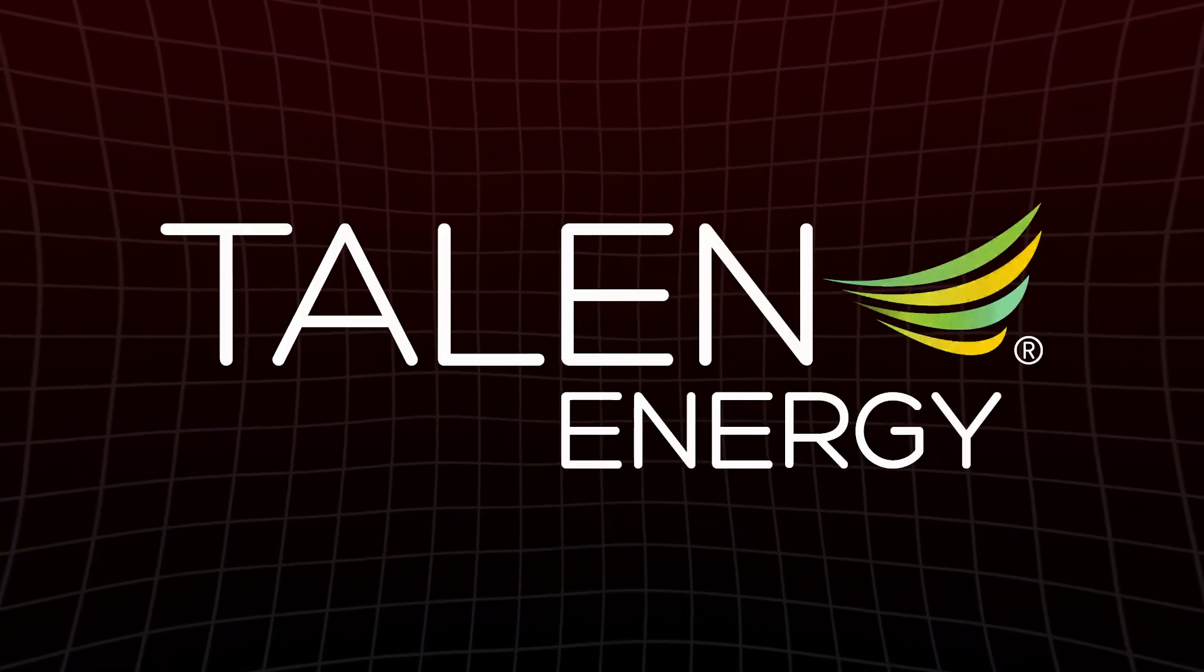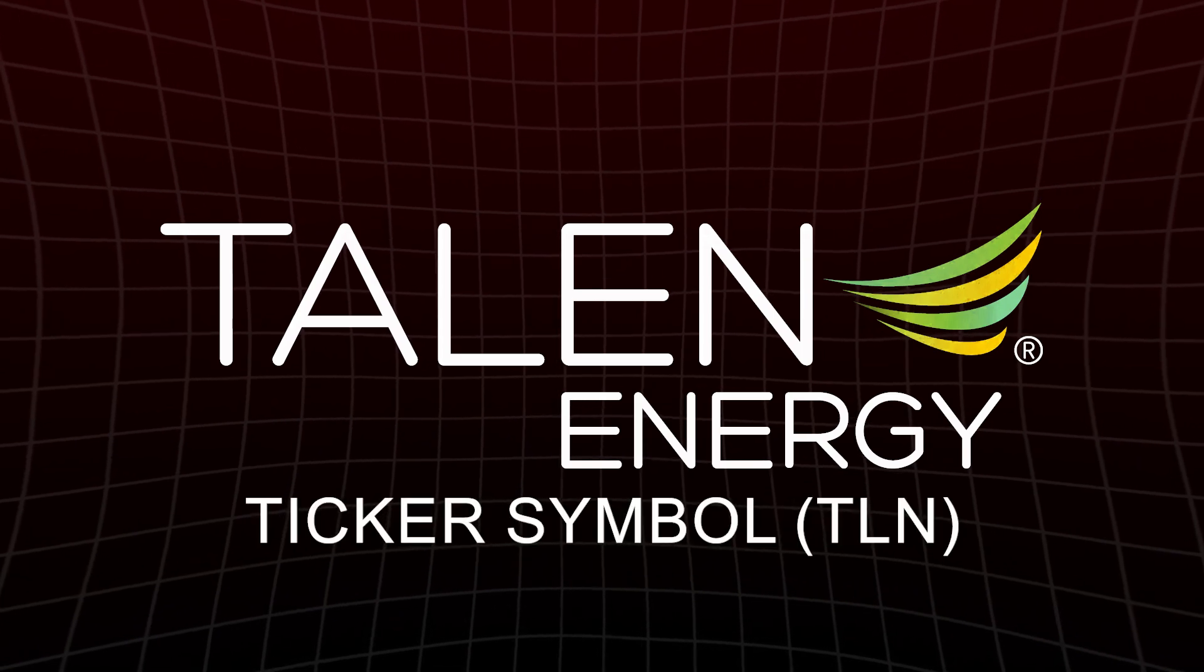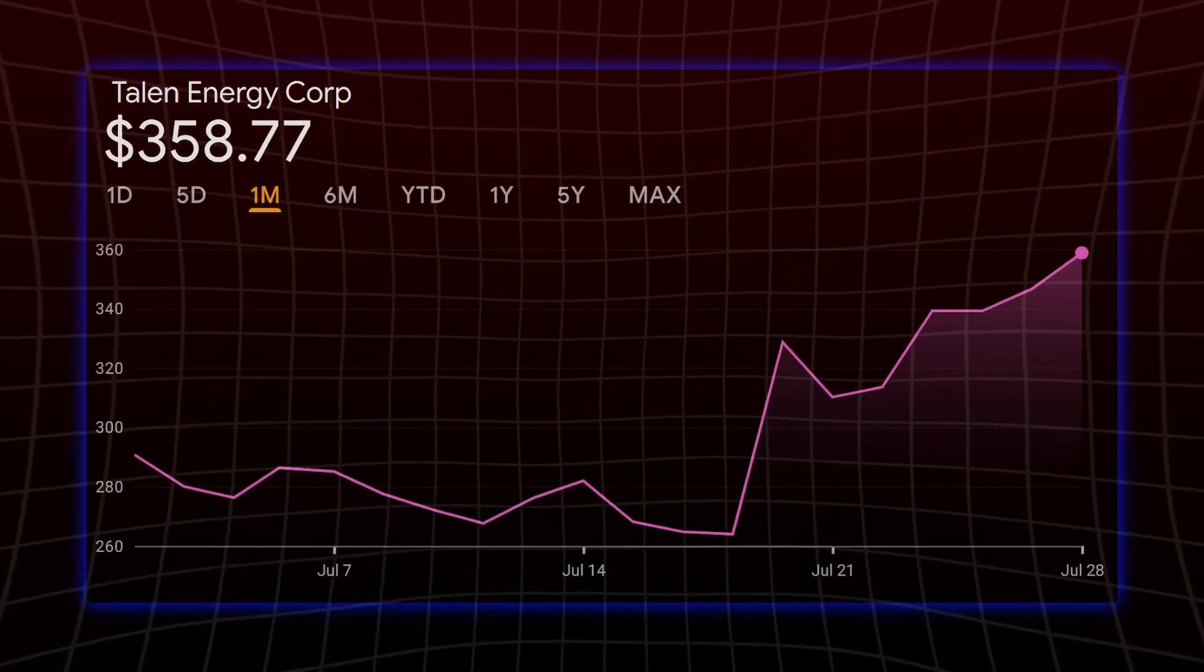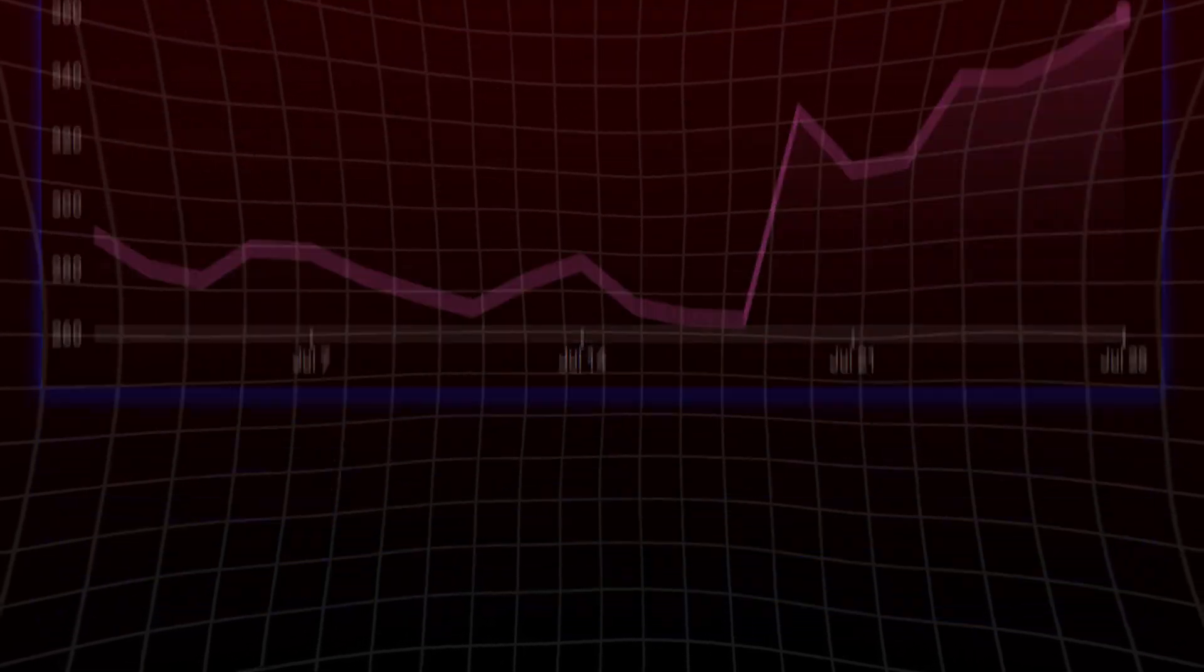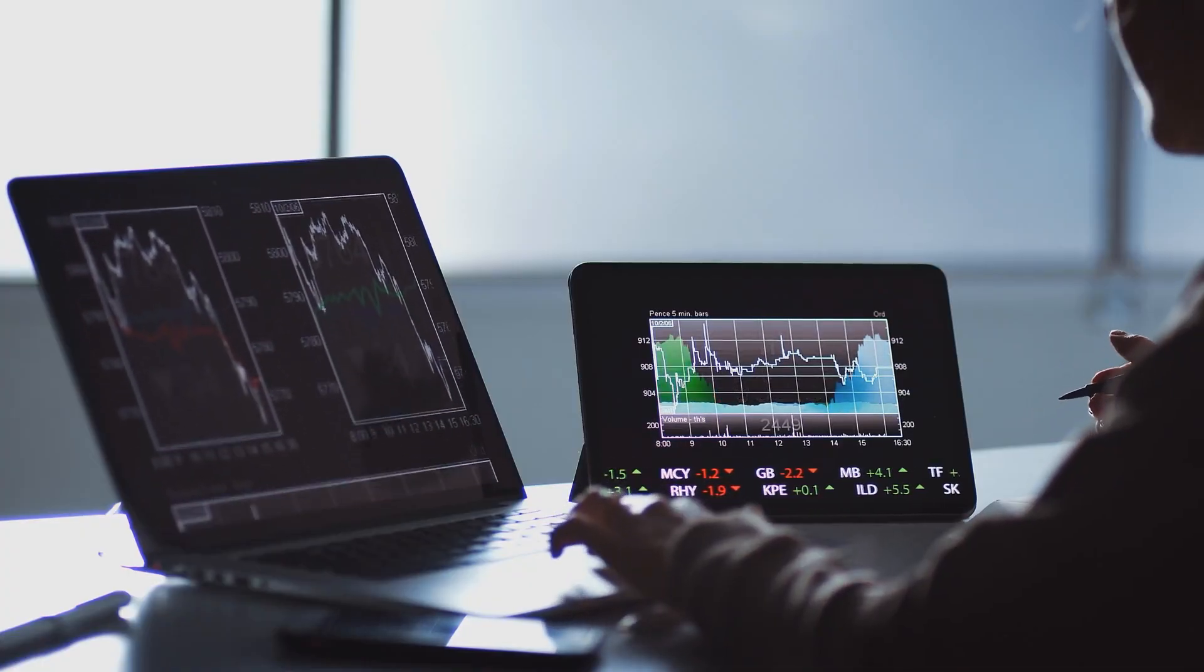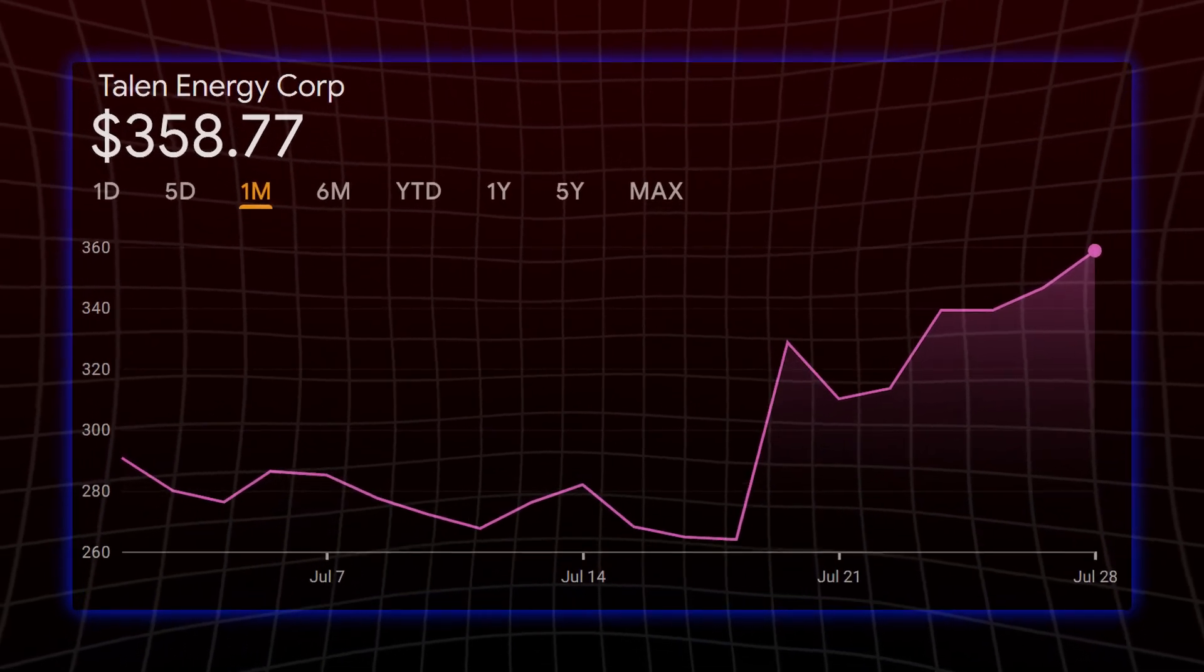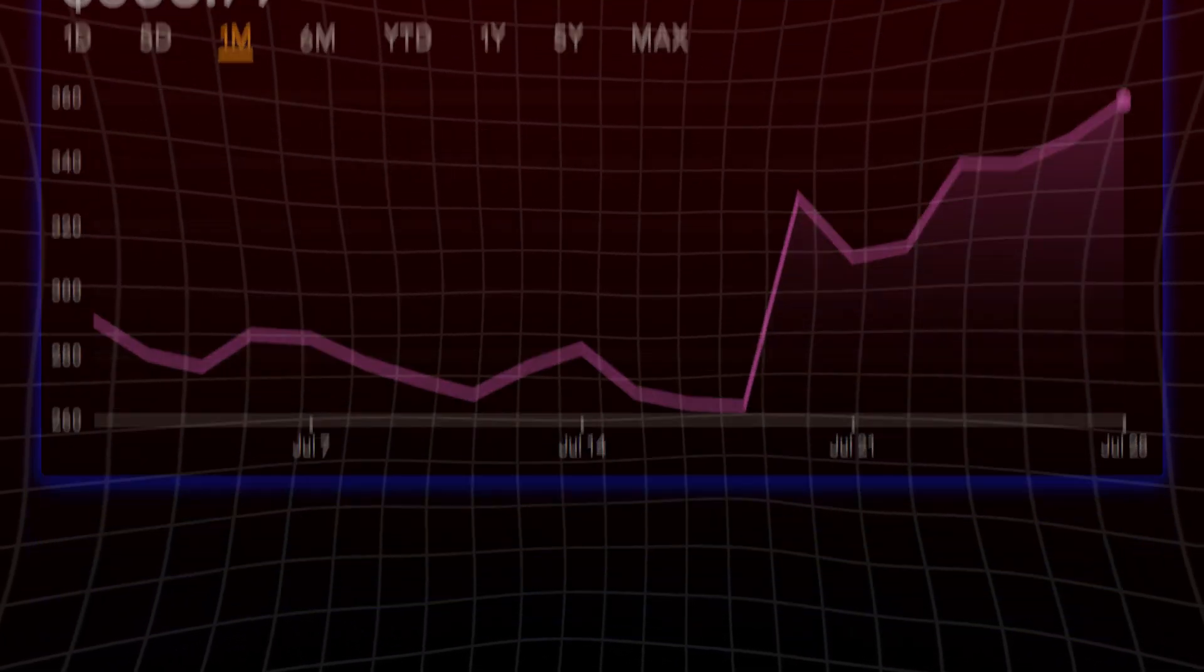First on the list is Talon Energy Corporation, ticker symbol TLN, a rising powerhouse in the race for AI-driven electricity demand. While most investors are chasing semiconductor names, Talon is quietly securing its place as a critical supplier in the coming megawatt arms race.